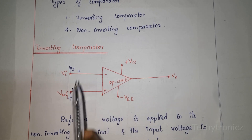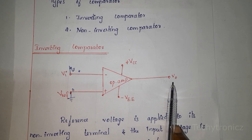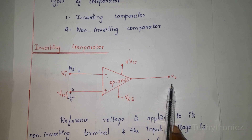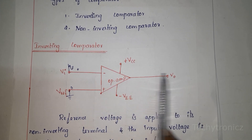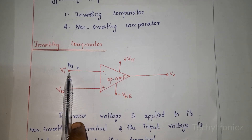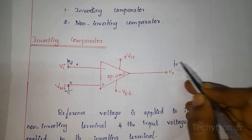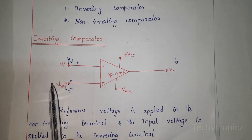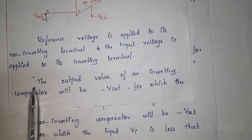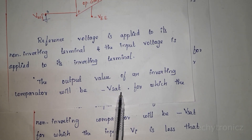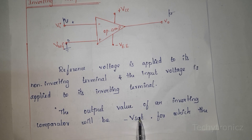Since V_in is greater than the reference voltage, the output value of the inverting comparator will be equal to minus V_sat. The output is 180 degrees phase-shifted from the input voltage. So when we apply a positive analog signal at the input, we get a negative output during the positive half cycle. Therefore, during the positive half cycle, the output of the inverting comparator is minus V_sat.